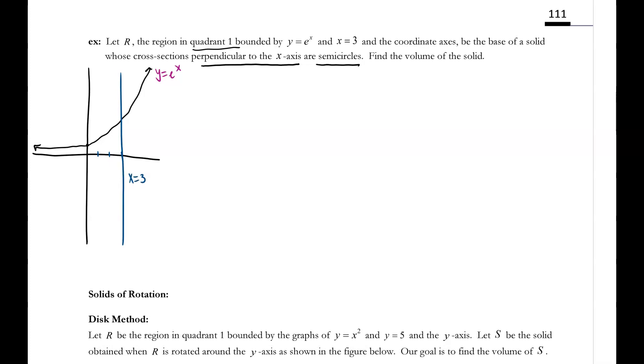And then our other boundaries are the coordinate axes. So if I just shade in this area of this region, it's this shaded area right here. From the y-axis to x equals 3, the top is y equals e to the x, the bottom is the x-axis. That's the first step, just drawing those graphs or those functions.